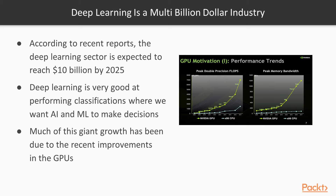This giant growth has mainly been due to improvements in GPUs, because deep learning is highly parallelizable. GPUs do lots of small calculations in parallel, and that's exactly what we do in deep learning — tens of thousands, maybe hundreds of thousands of linear multiplications in parallel. So GPUs are very well suited for deep learning.